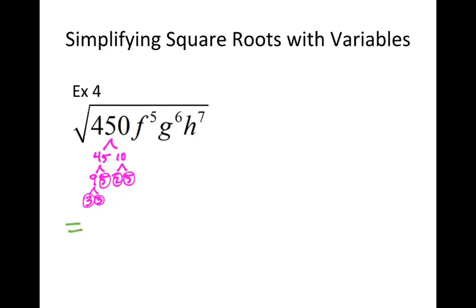First thing we're going to do, just like we normally do for simplifying a square root, is make a factor tree and then rewrite the problem. So I'm going to rewrite it underneath. We're going to have 2 times 3 times 3 times 5 times 5, and then the F and the G and the H part I'm just going to bring down again. I don't have to do anything with that yet until I start taking stuff to the outside. So I have F to the 5th times G to the 6th times H to the 7th.